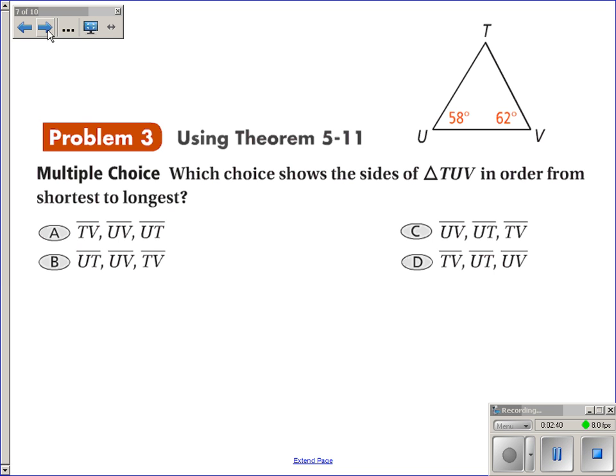And I'll find that by adding up these two angles. 58 plus 62 is 120. And subtracting that from 180, so 180 minus 120 is 60. So this angle up here must be 60 degrees.